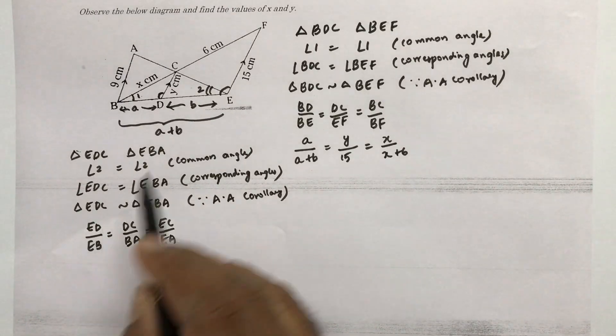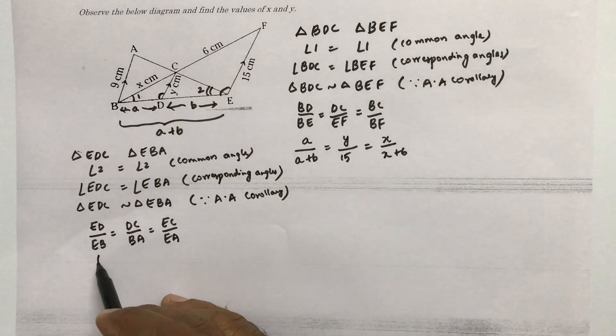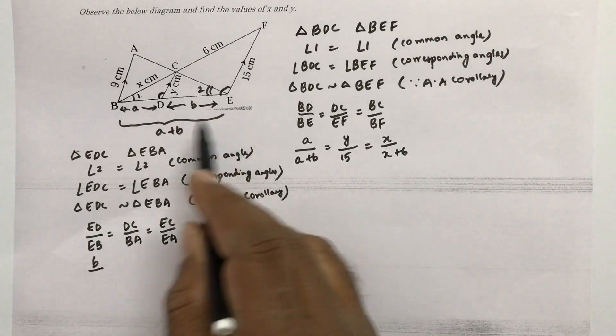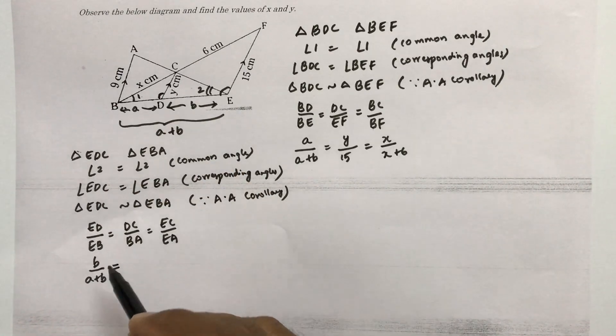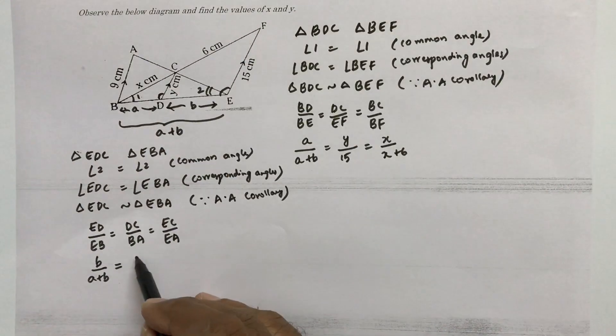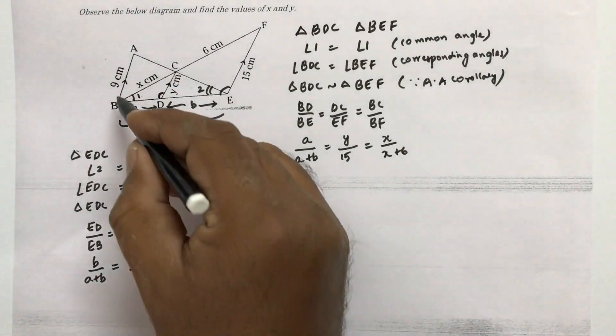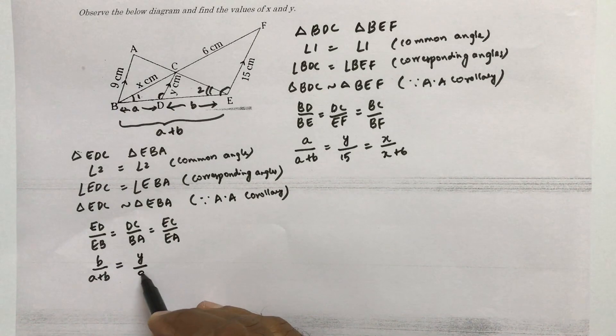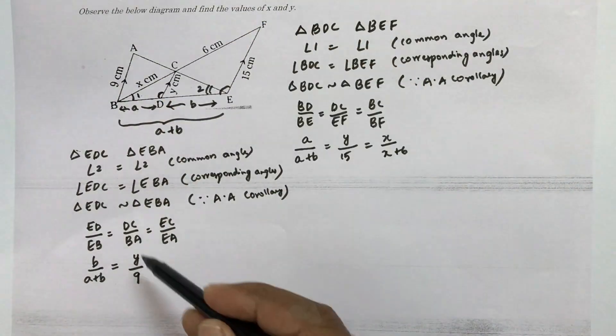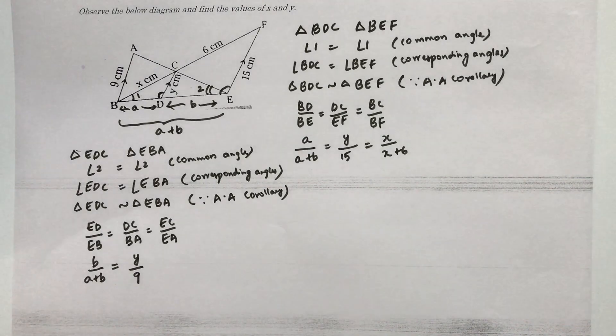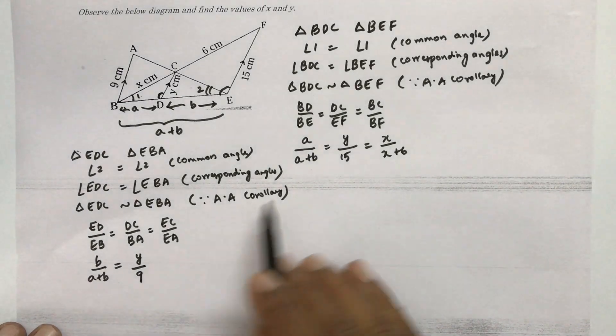Now here if we substitute the values, ED will be like B and EB will be A plus B equals DC that will be Y by BA that is 9. And EC and CA we don't have the values, so you can skip that part.